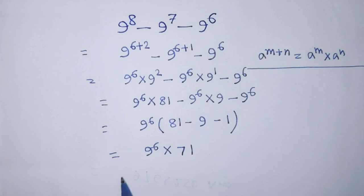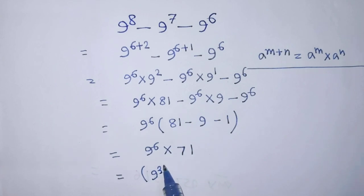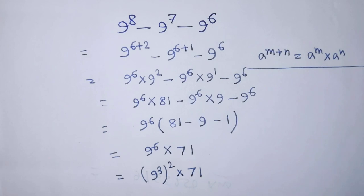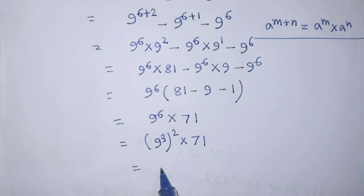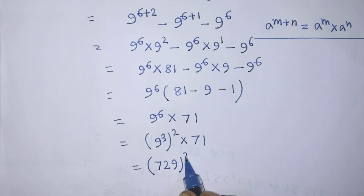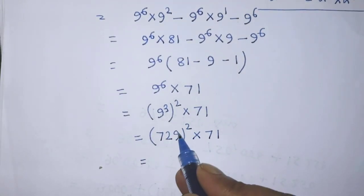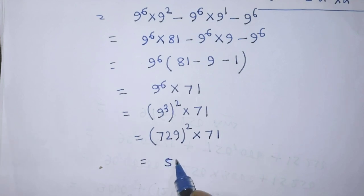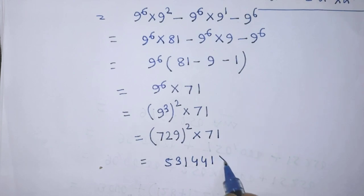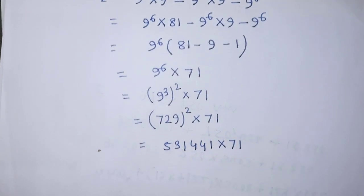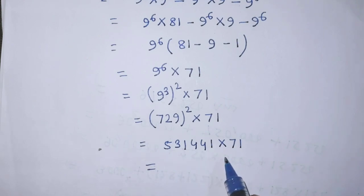After that, we rewrite 9 to the power 6 as 729 whole to the power 2, giving 729 squared times 71. Since 729 squared equals 531,441, we then compute 531,441 times 71.